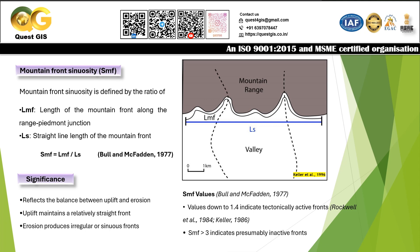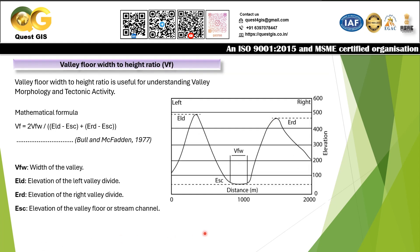Let's see what the Smf values mean for tectonically active versus inactive fronts. Values down to 1.4 indicate a tectonically active front. Values greater than 3 indicate presumably inactive fronts, meaning the curved mountain front length is three or more times the straight-line distance. Those fronts are considered tectonically inactive.